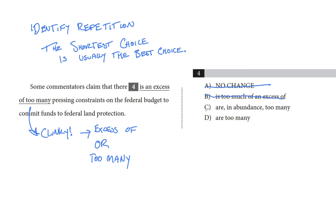Choice C is 'there are in abundance too many pressing constraints.' This is no good either because it's repeating that too many idea — abundance and too many mean nearly the same thing — so let's cross that off. That leaves us with choice D, which is not only the shortest choice, it's one of the predictions I had earlier for a neater, shorter version of the phrase.